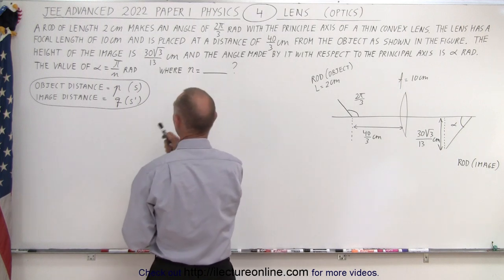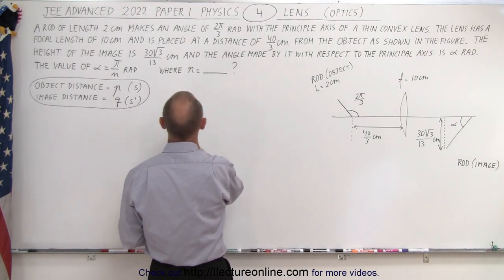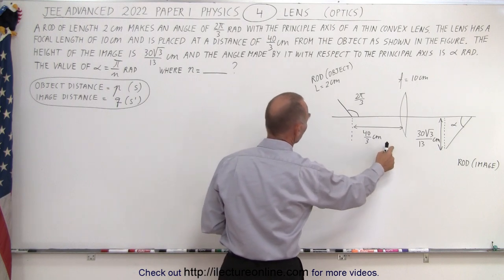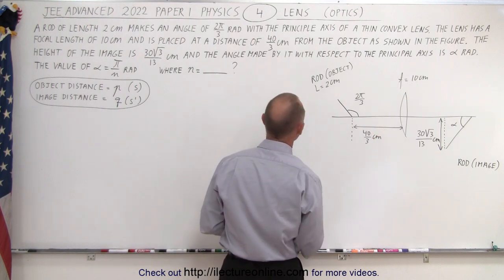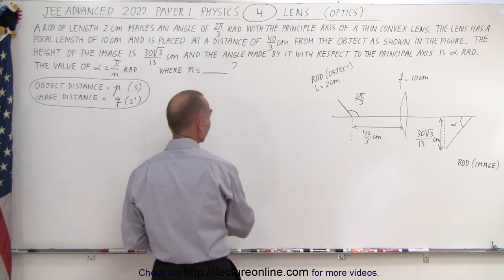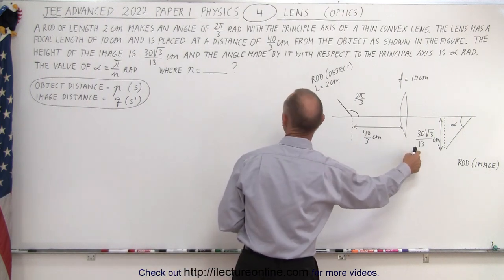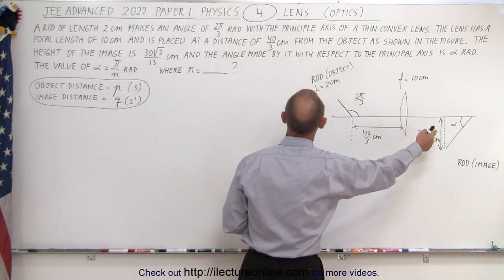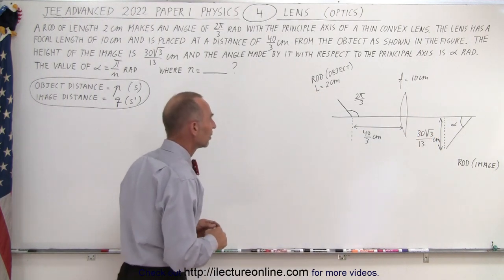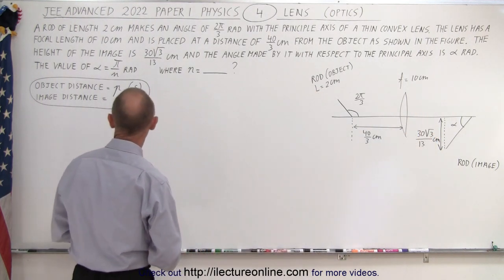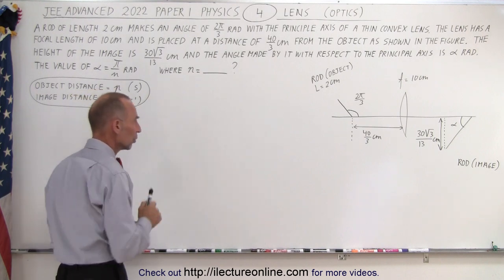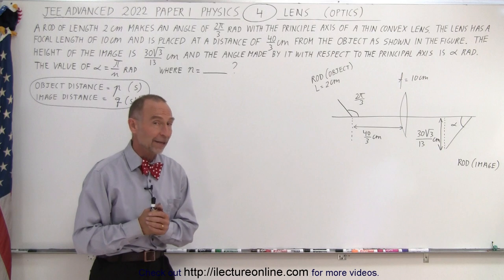The lens has a focal length of 10 centimeters and is placed at a distance of 40 over 3 centimeters from the object as shown in the figure. The height of the image is 30 times the square root of 3 over 13 centimeters, and the angle made by it with respect to the principal axis is alpha radians. The value of alpha is π over n radians, where n is what we're trying to find.